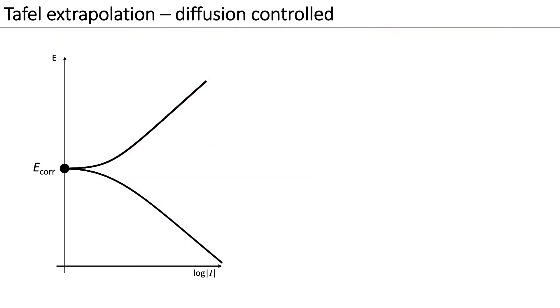The previous example showed the case where both the anodic and cathodic branches were under activation control. However, sometimes the cathodic branch is diffusion controlled. In this case, the branch reaches a plateau defined by the limiting current.